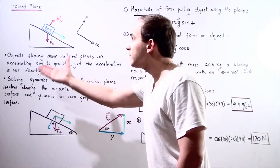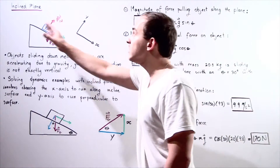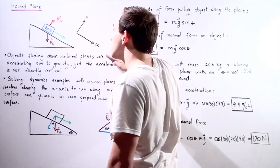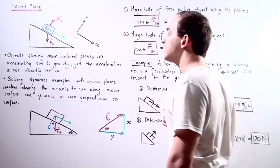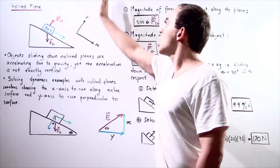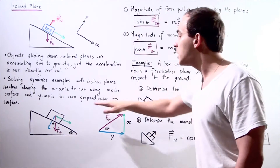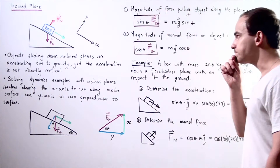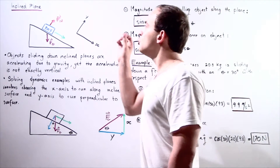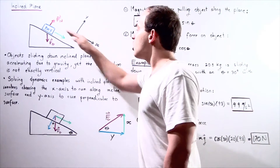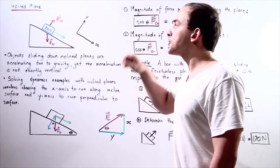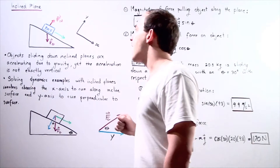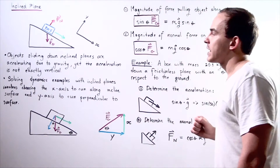Whenever we're solving dynamics problems involving inclined planes, we choose the x-axis to run along the surface of the inclined plane, and we choose the y-axis to run perpendicular to the surface of our inclined plane. Notice that the normal force — the force that our inclined plane exerts on the box — is perpendicular to the surface of our inclined plane.